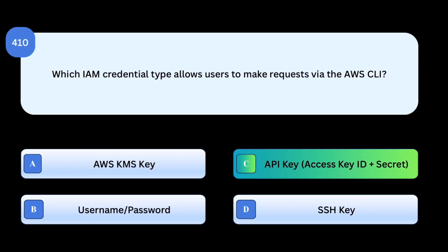Correct answer: API Keys. AWS CLI requires programmatic credentials, provided as an access key ID and secret access key. Why others are incorrect: AWS KMS is used for encryption, not authentication. Username/password works for AWS Management Console login, not CLI. SSH keys are used for connecting to EC2 instances, not for AWS CLI.